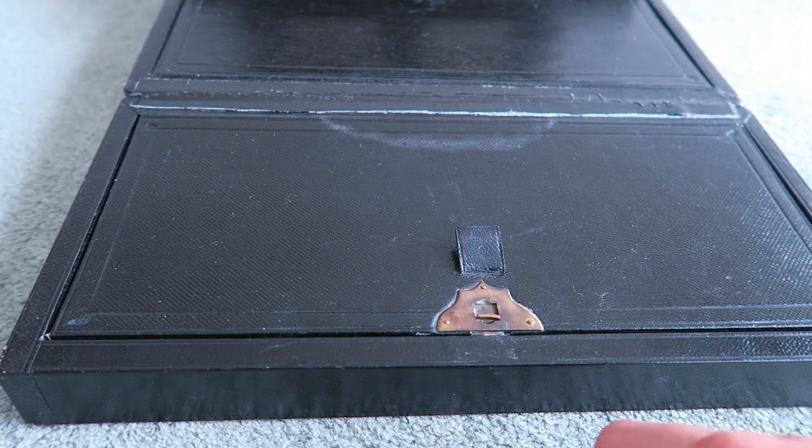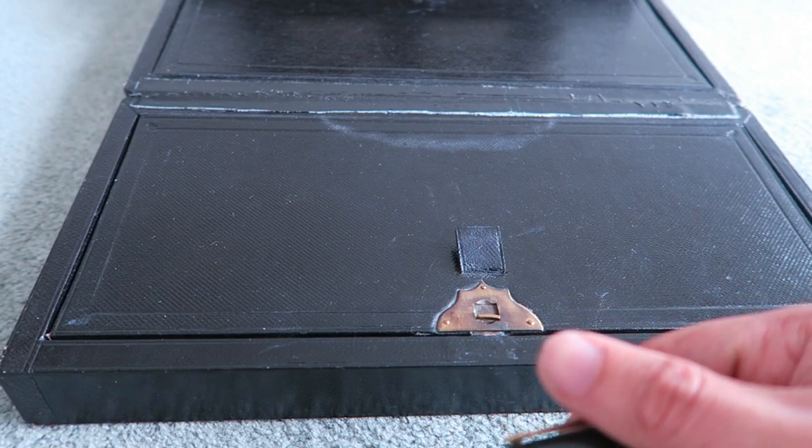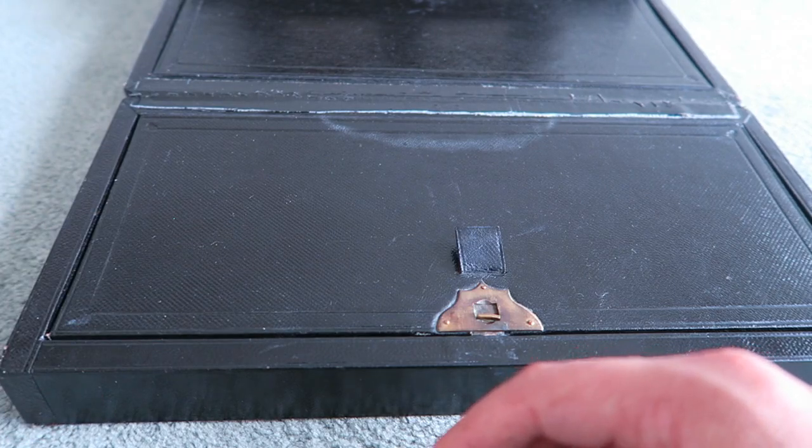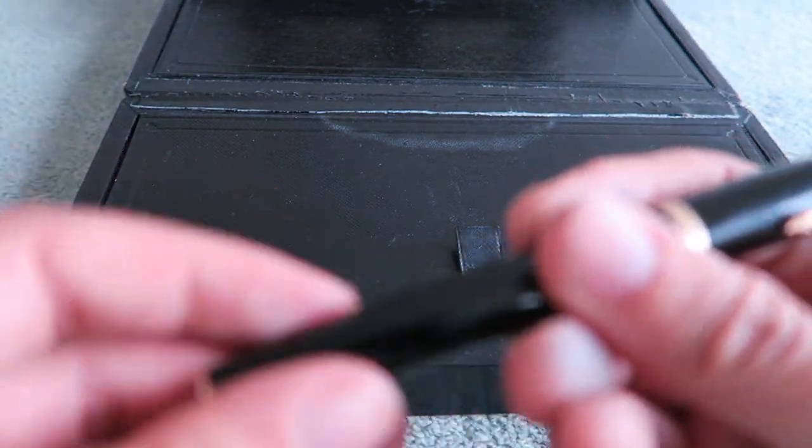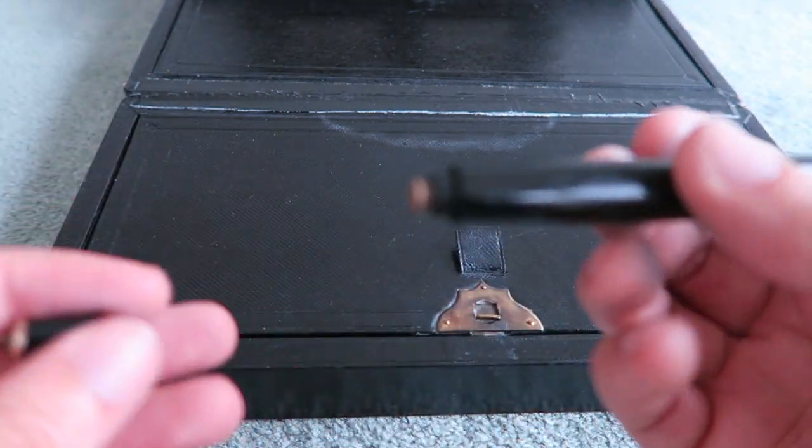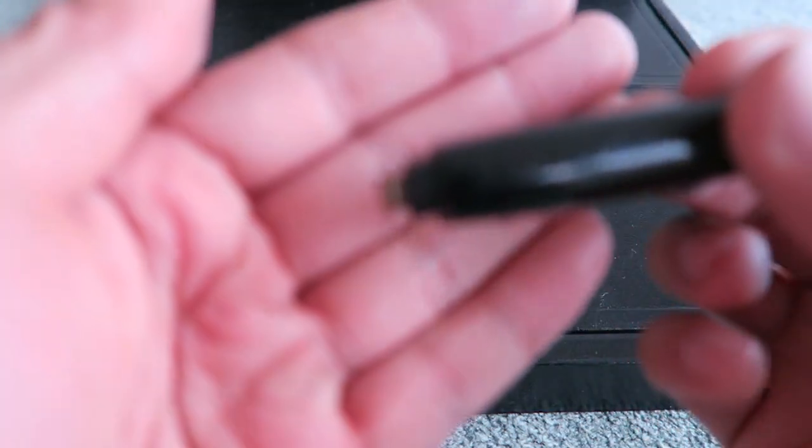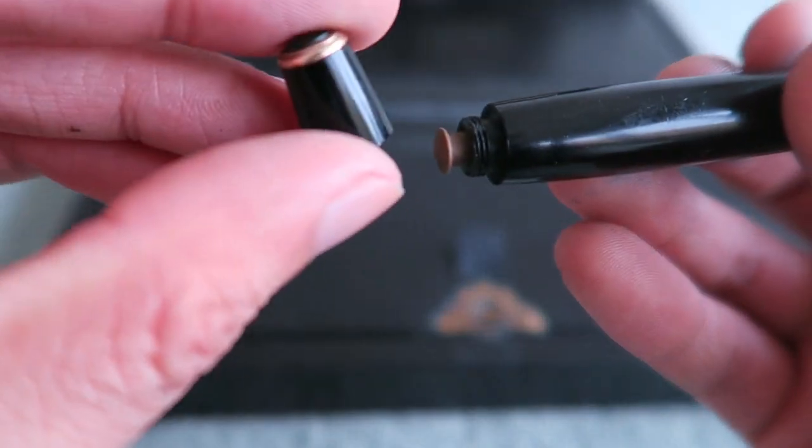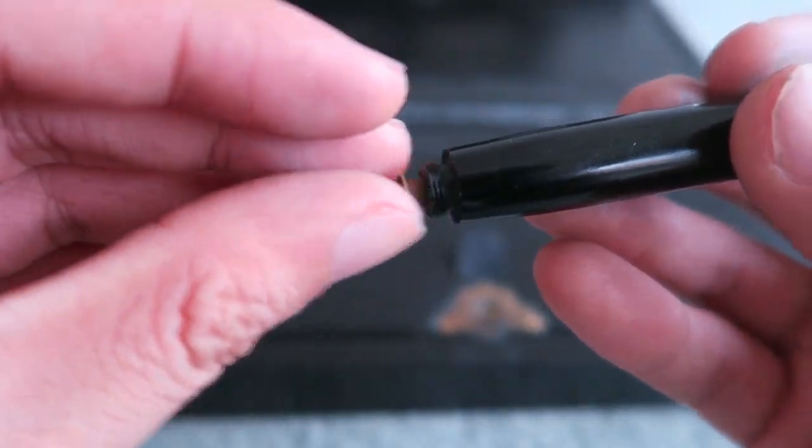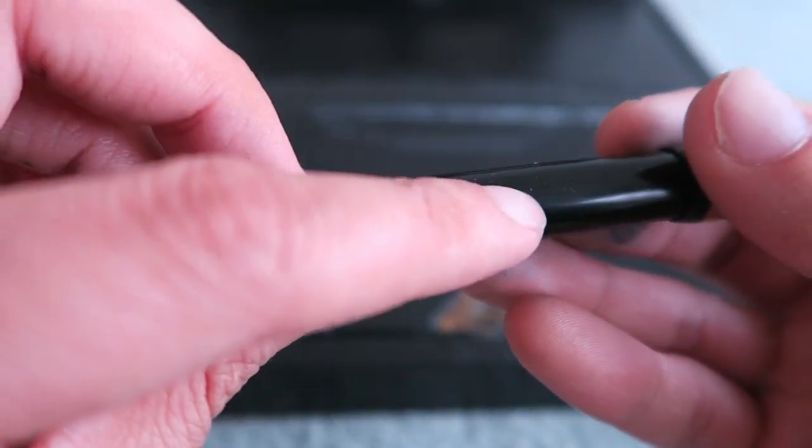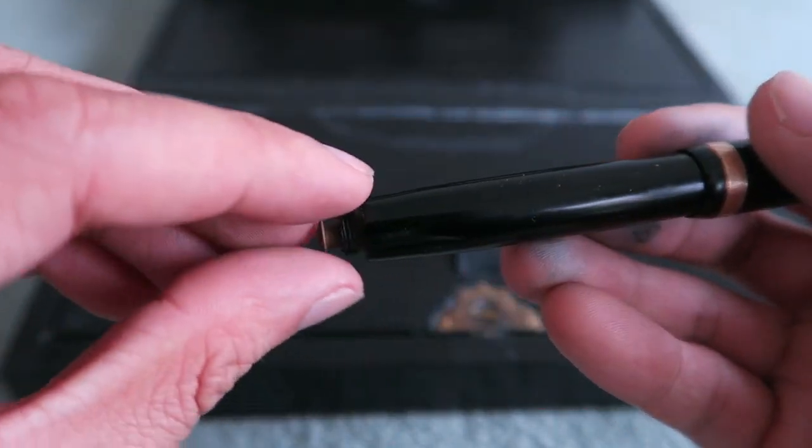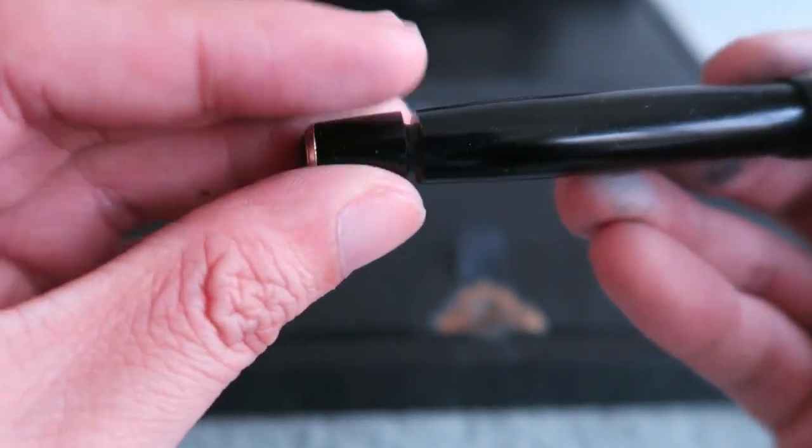In the heyday of fountain pens, there were all kinds of filling mechanisms. You could use an eyedropper, you could use a lever filler, you could use a crescent filler. This one is a button filler. You take off the cap at the end of the pen. You press down the button. That presses a spring inside that deflates the sack. It sucks up the ink. And then you screw this back on.